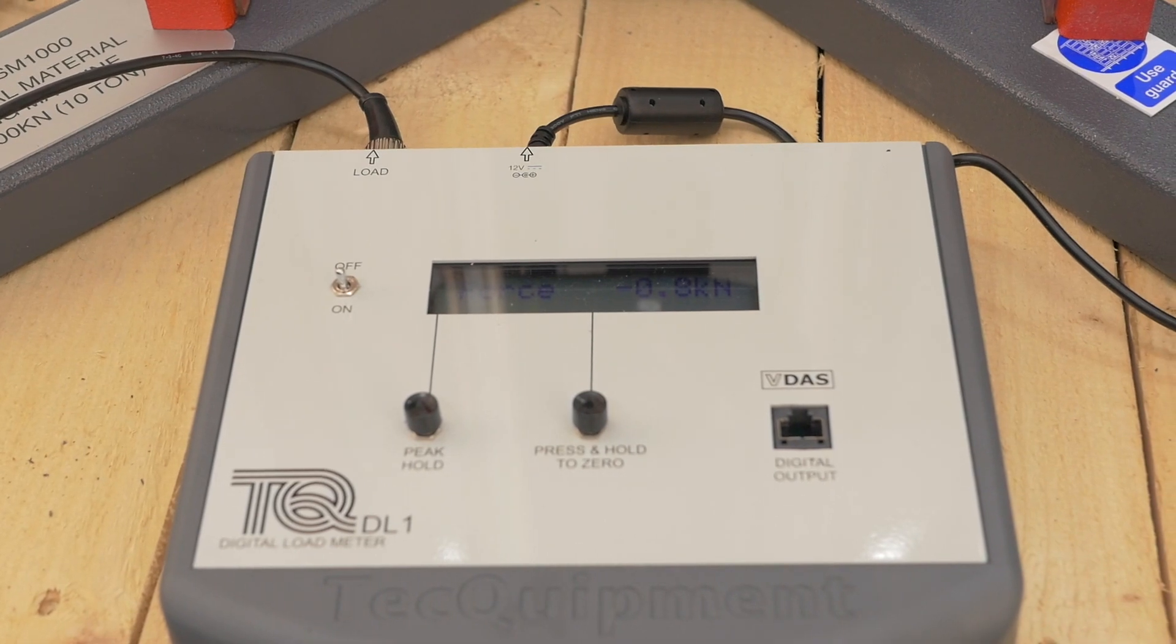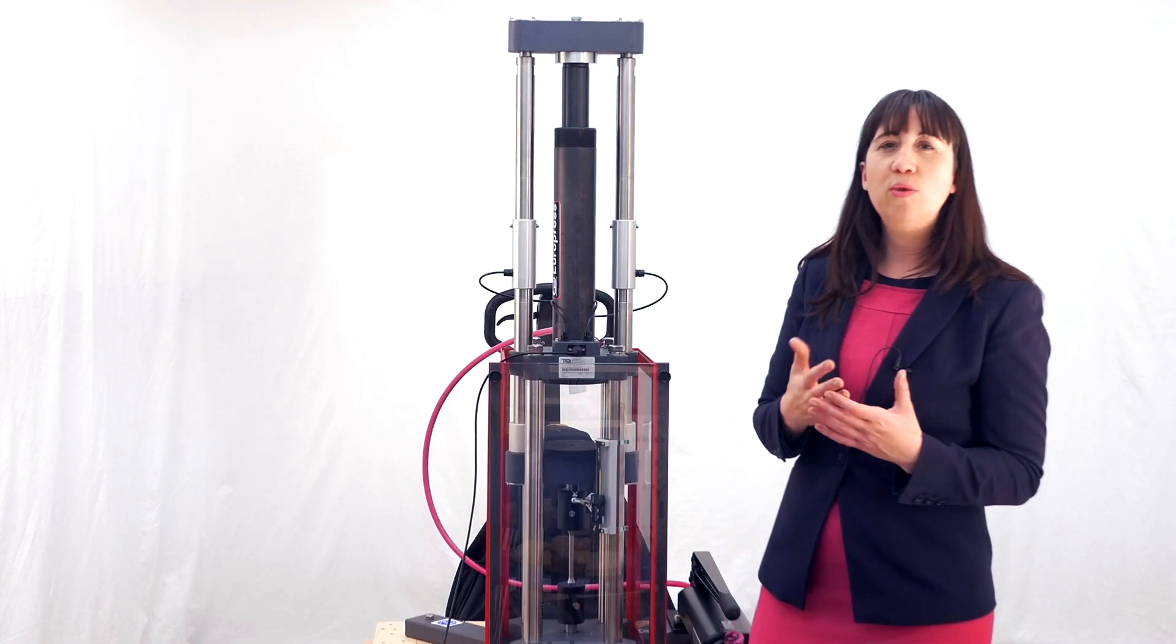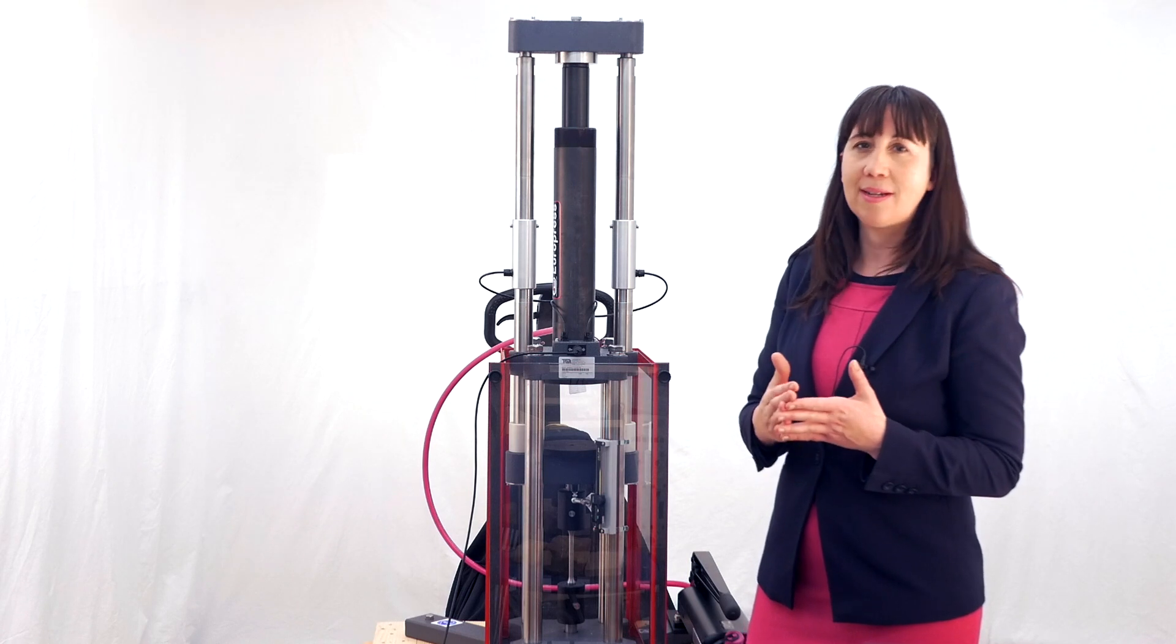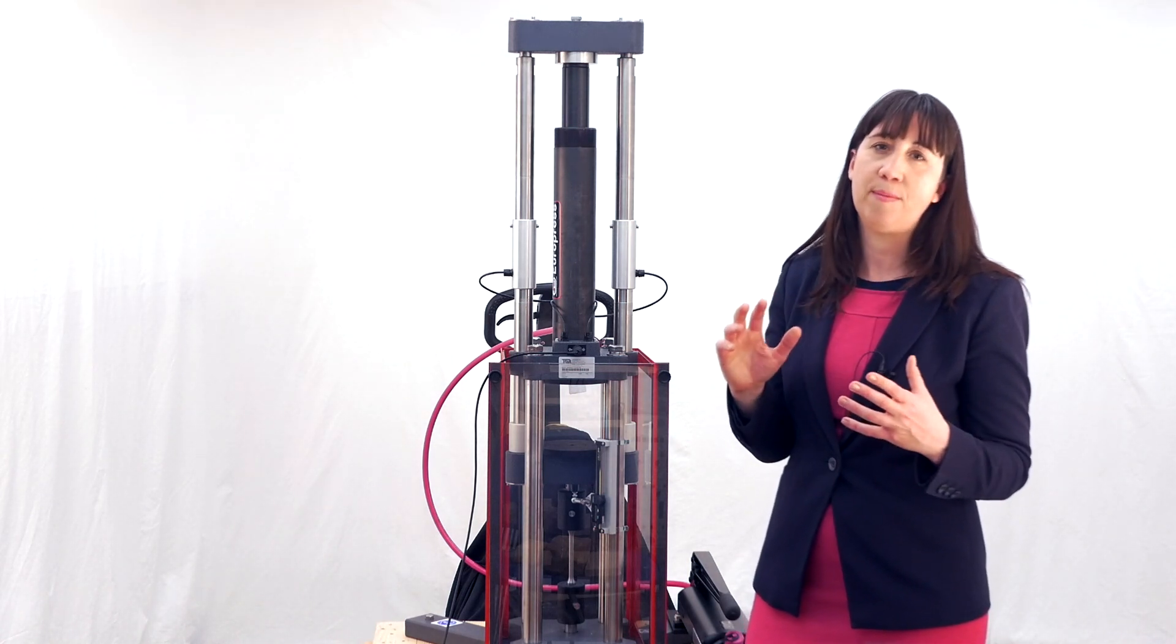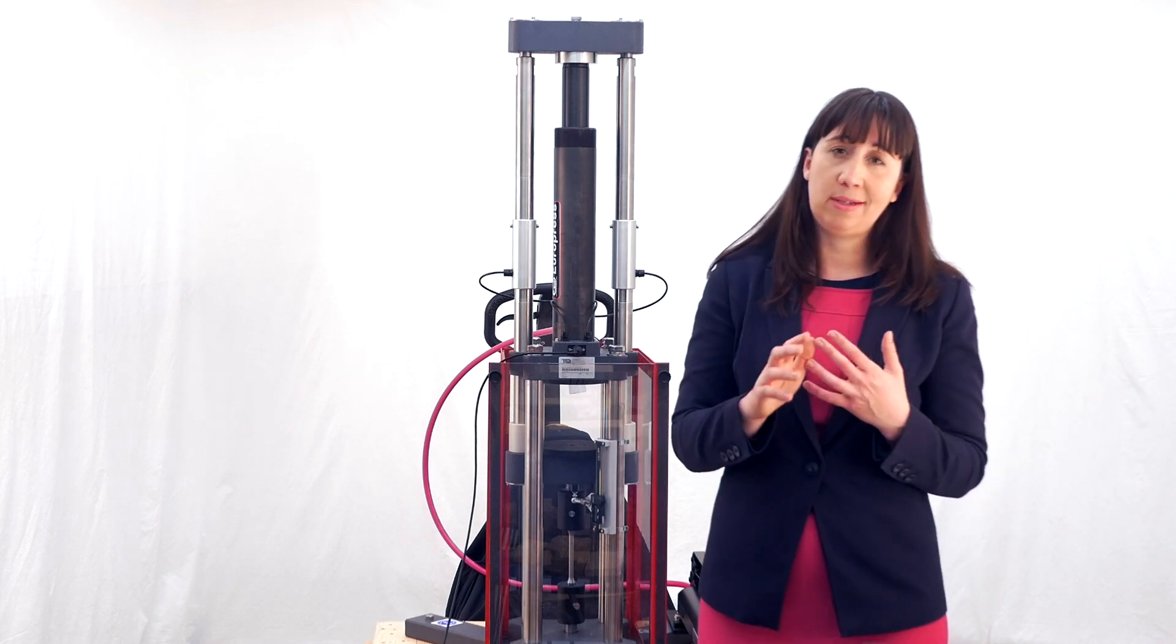The digital load meter shows the real-time force and stores the peak force. A digital displacement indicator measures and displays the overall extension of the loading platform or part of the structure under the test.